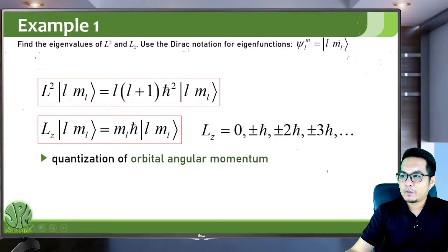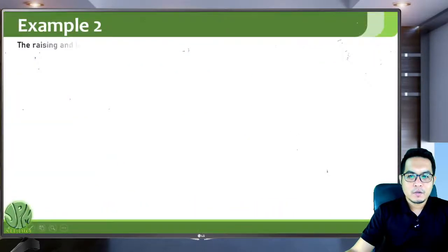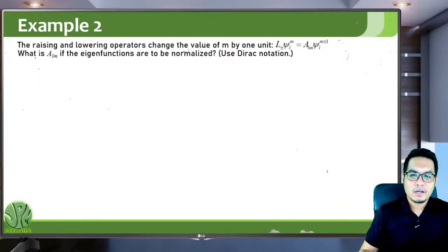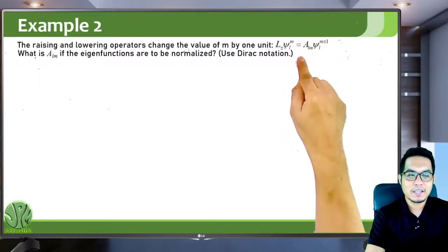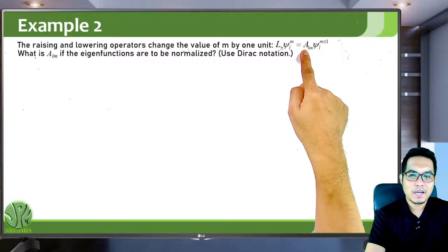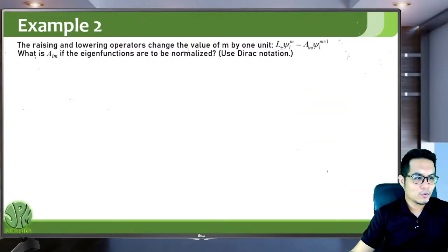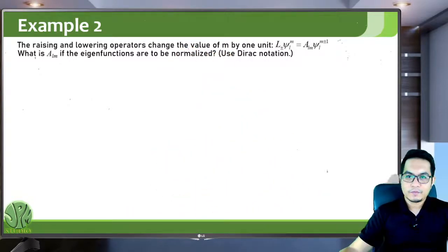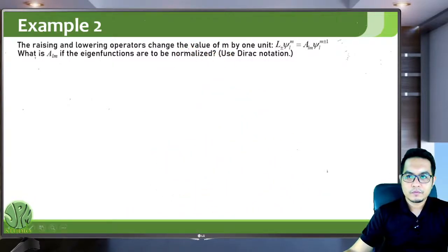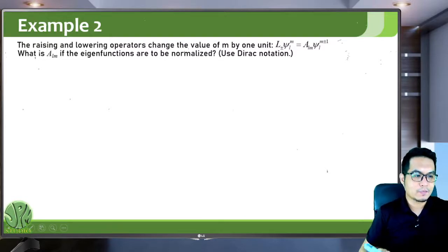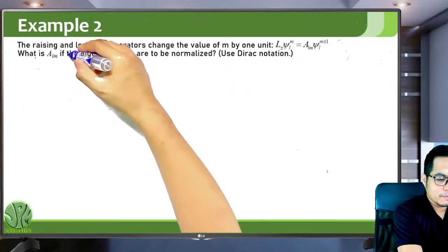Let's now go to another example. We are asked to find the complex constant in the raising and lowering ladder operator equation. We introduced this equation earlier, and we are asked to find A_lm, the complex constant number. In the previous problem, we obtained the relationship L-plus or minus L-minus or plus equals L² minus Lz² plus or minus h-bar Lz.